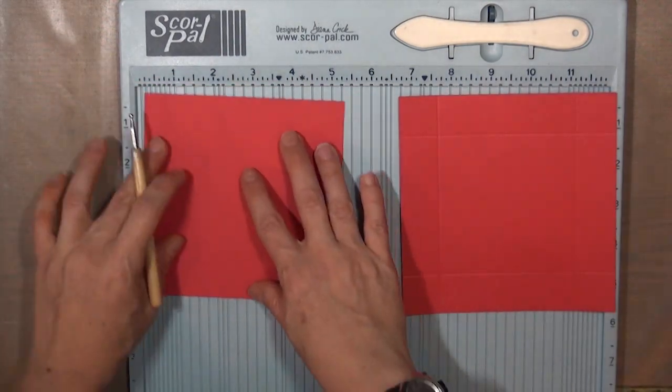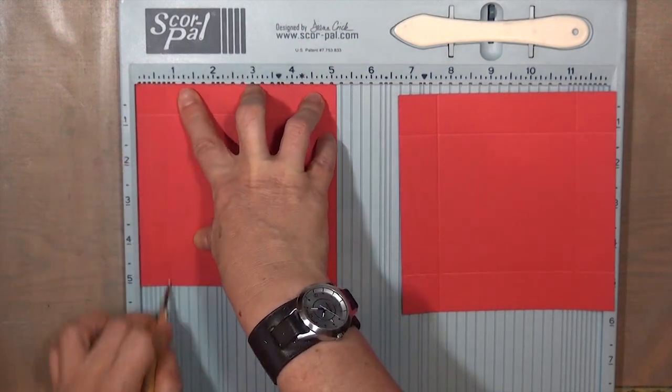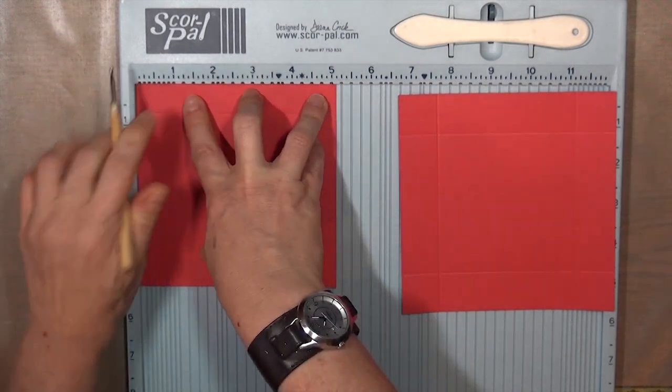Next we're going to take the 5 1/8 inch, and that's going to be the lid of the box. We're going to score that piece at 3/4 of an inch on all 4 sides.